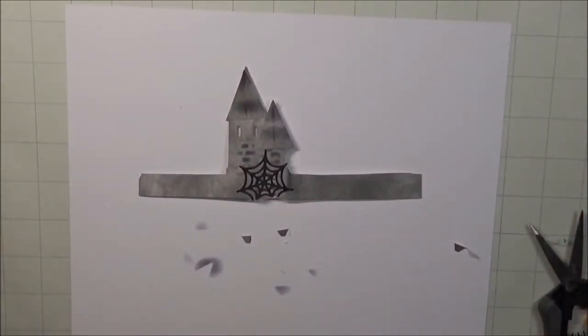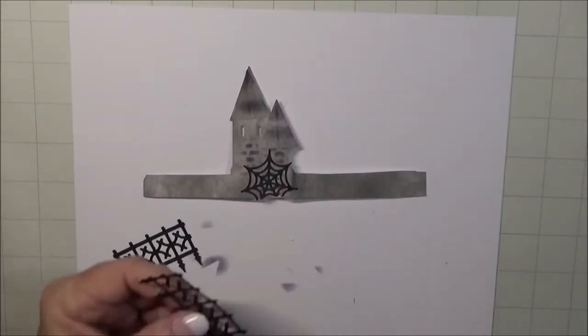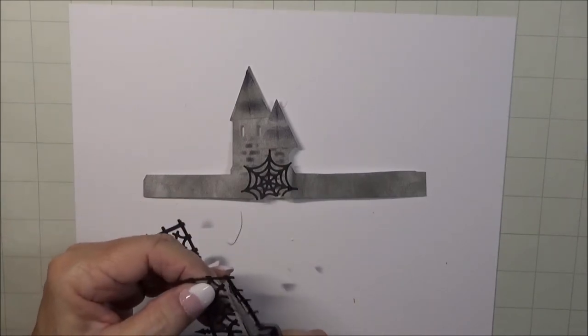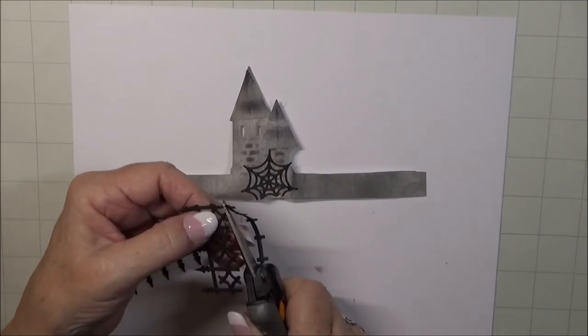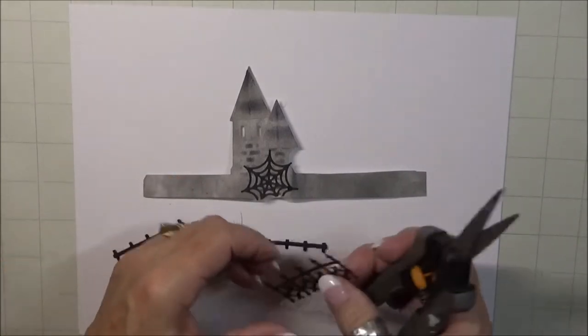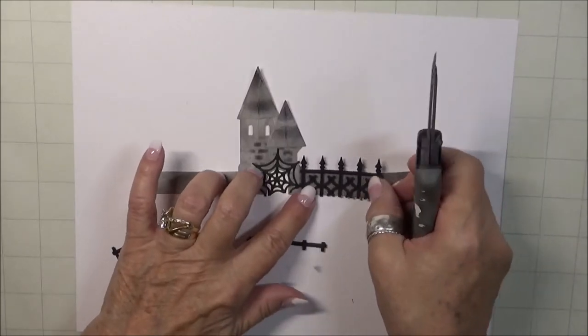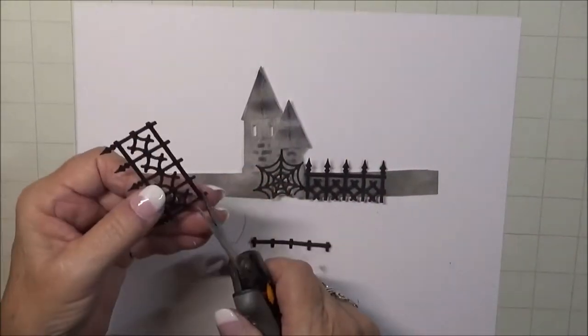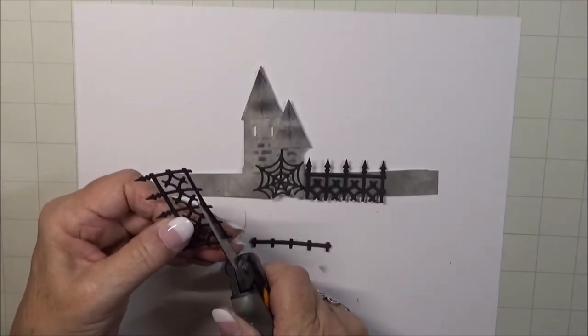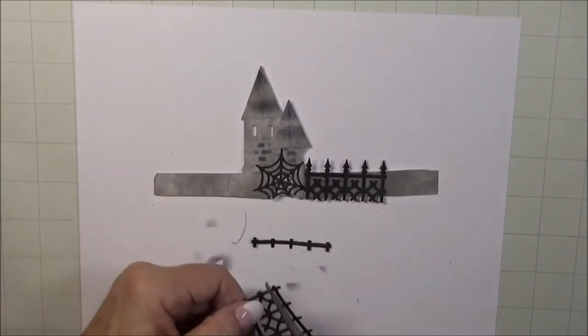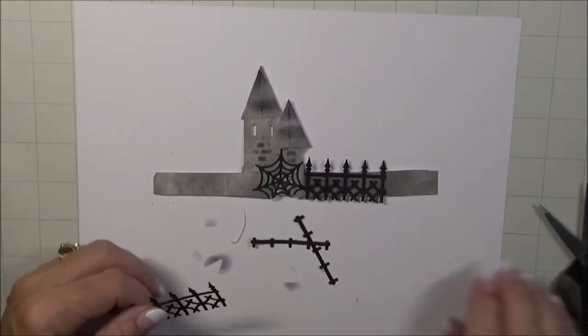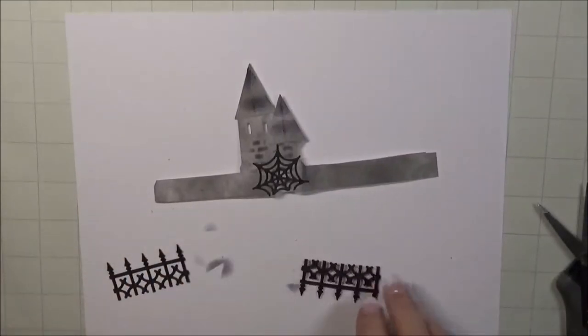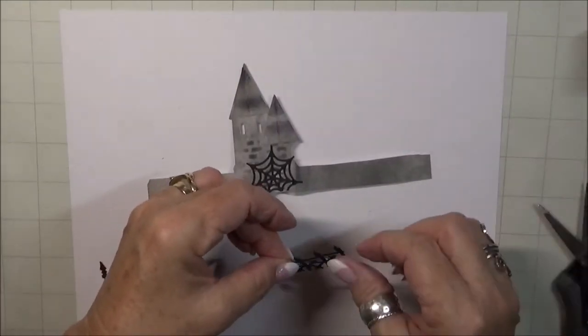Now we're going to add our fence. I used Karen's house and fence die for this particular part, but it was a little bit too tall for my liking. So I cut it off at the bottom, just below that X in the design of the fence. We're going to place one on this side, and we're going to do the same thing to the other one, and place it on the other side. A little bit of glue, and we're good to go.